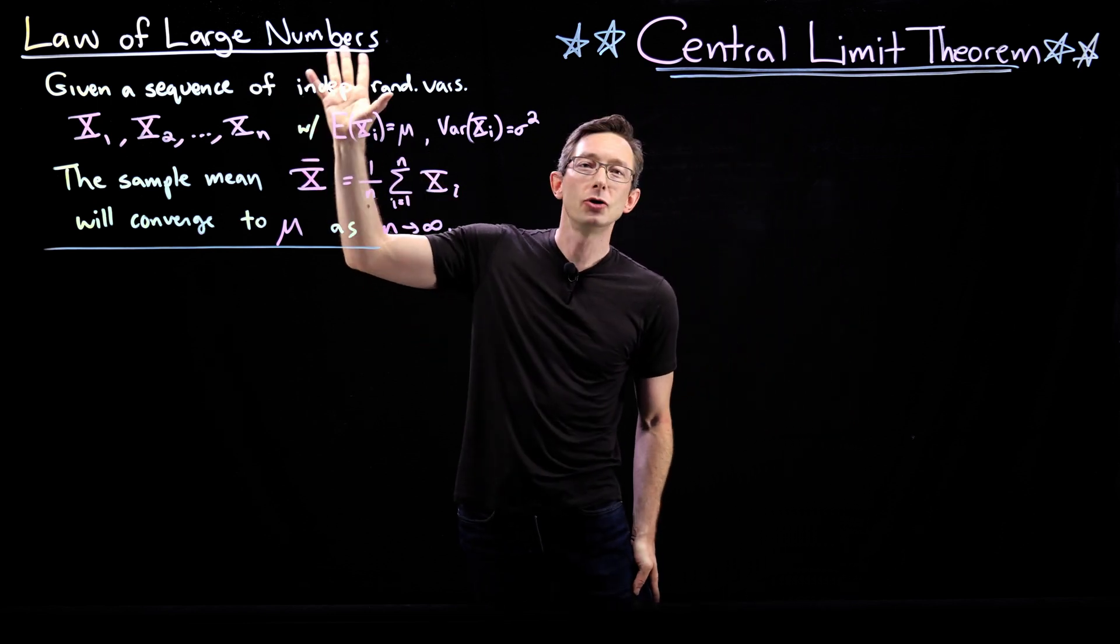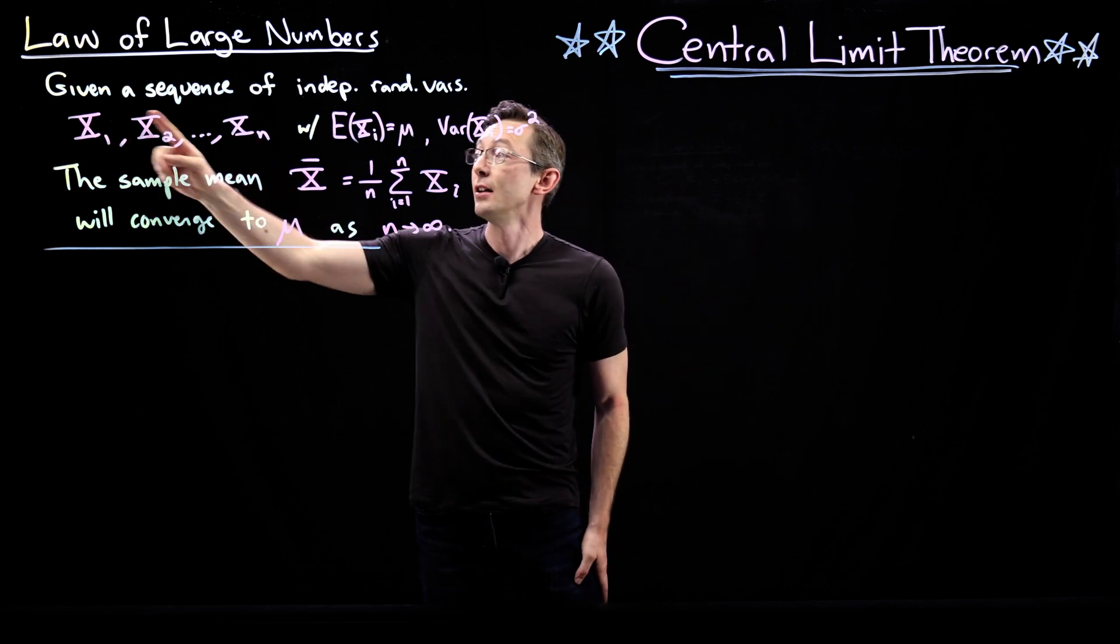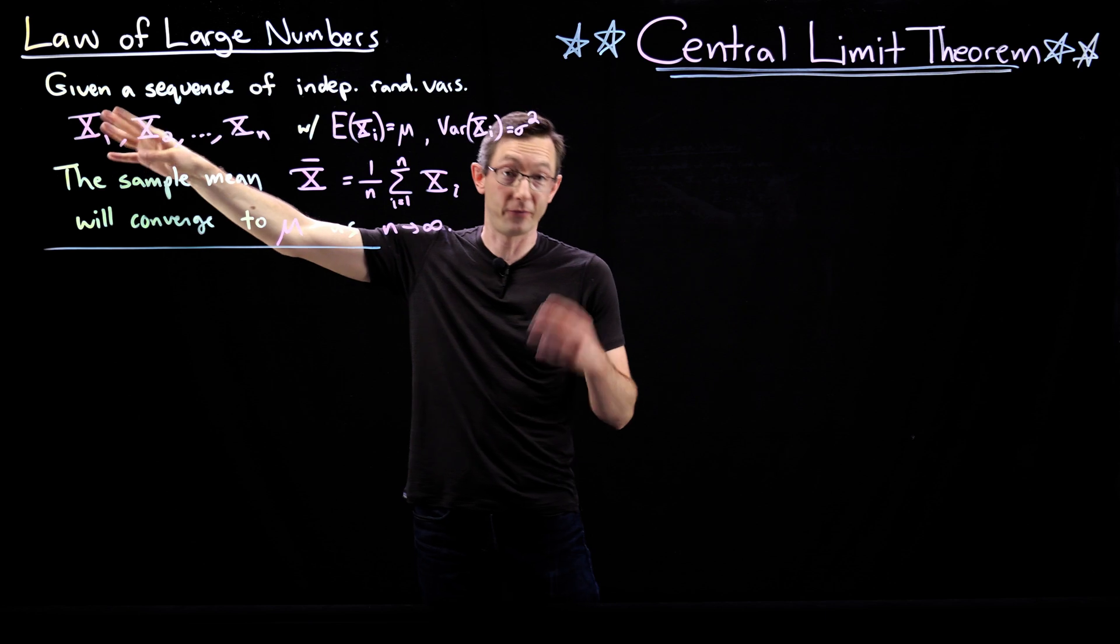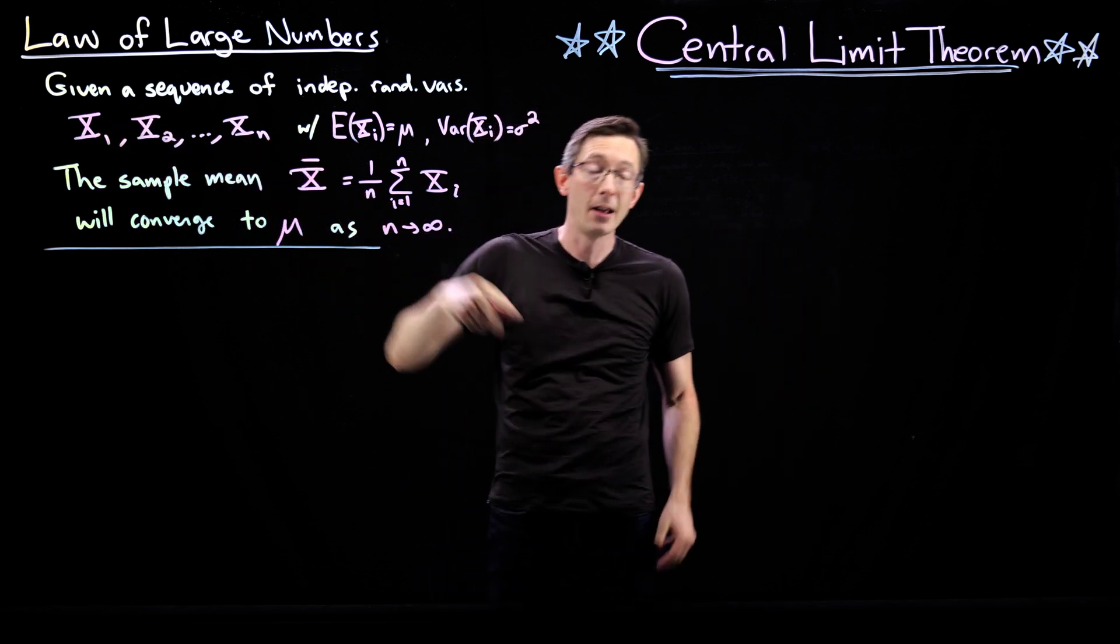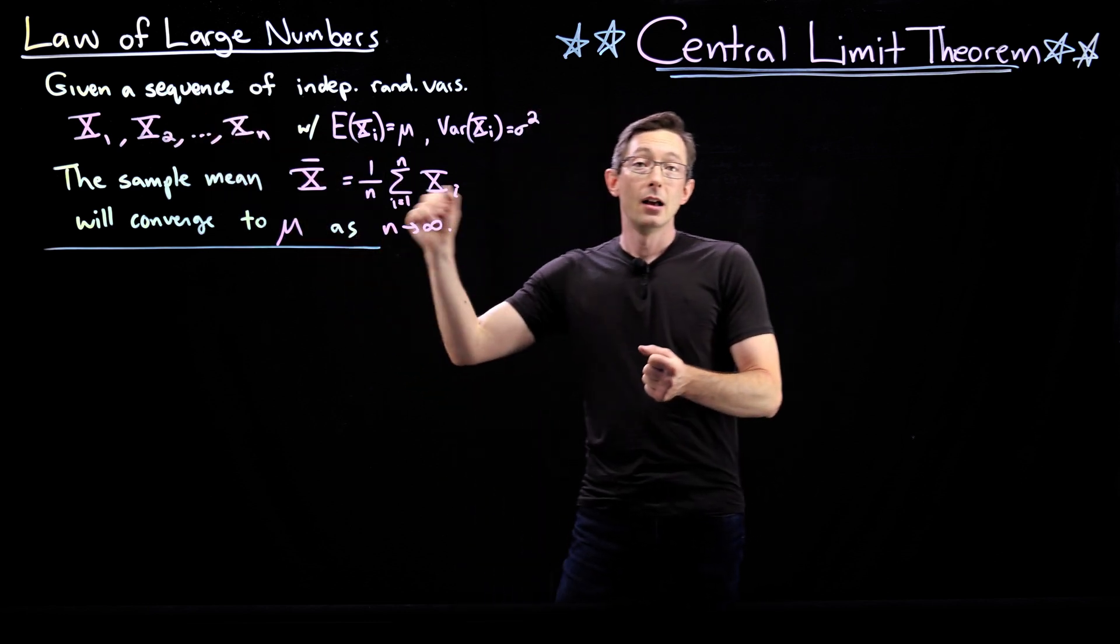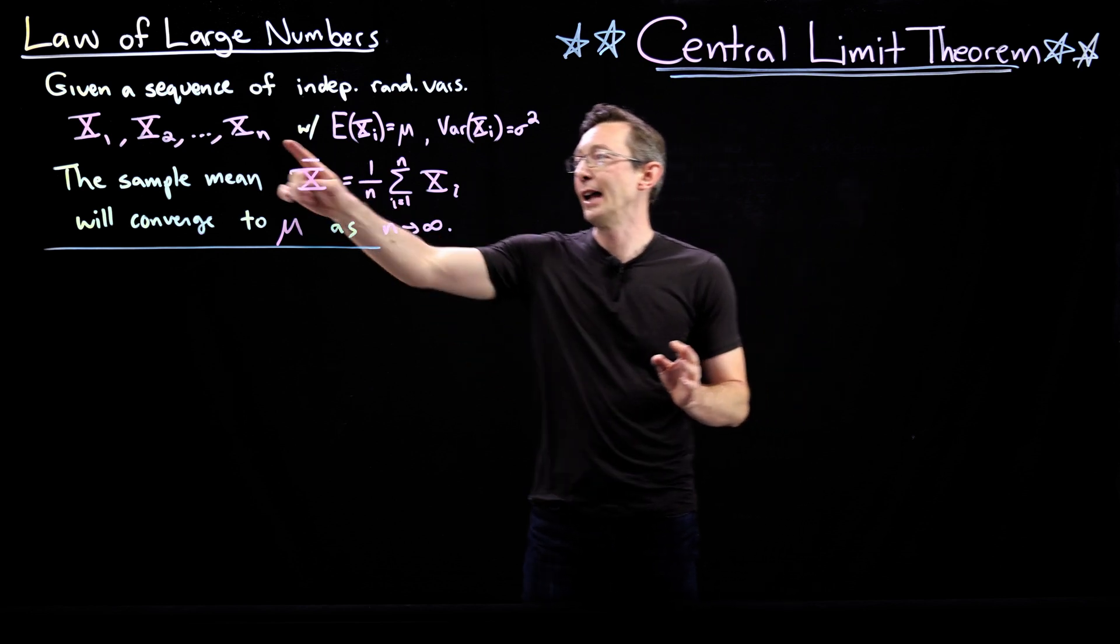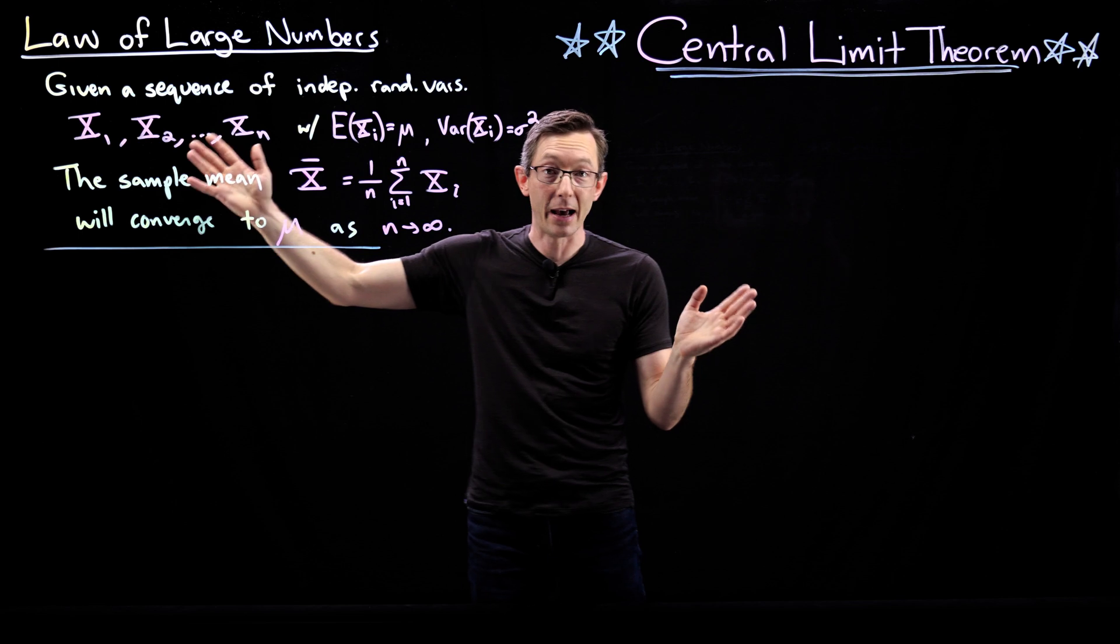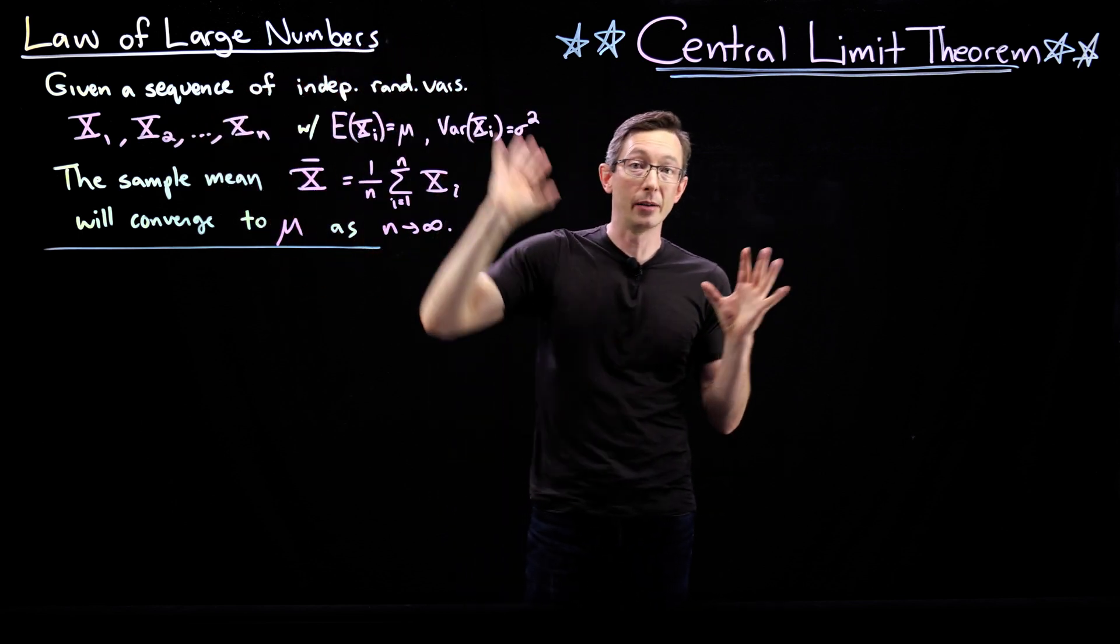And this is a very intuitive statement that if I have data from independent, identically distributed random variables from n different identical independent random variables, x1 through xn. Again, these could be n coin flips, n dice rolls, n questionnaires you ask n different people, all kinds of things, the heights of n different Americans or n different Texans, it doesn't matter. This is n independent random variables that you sample.